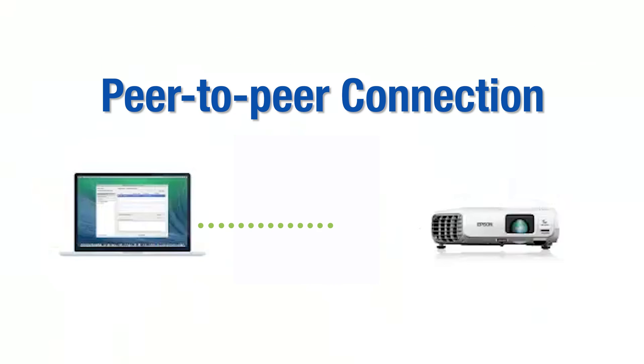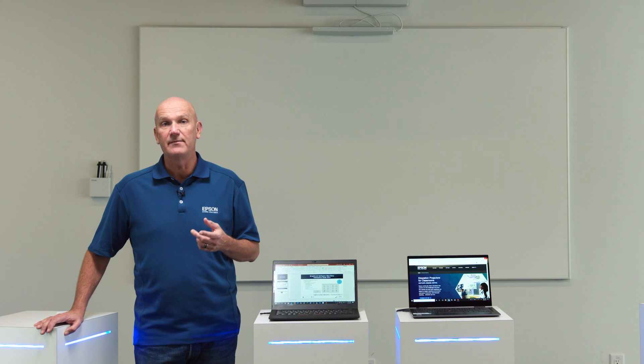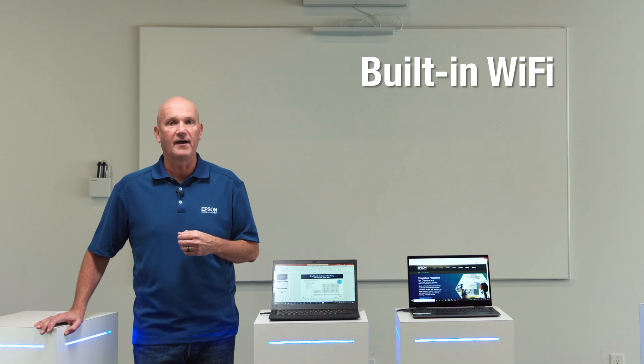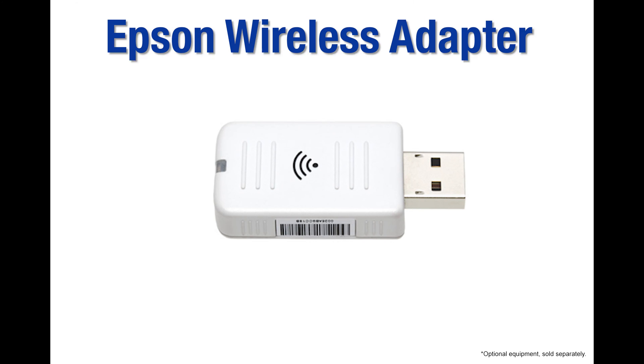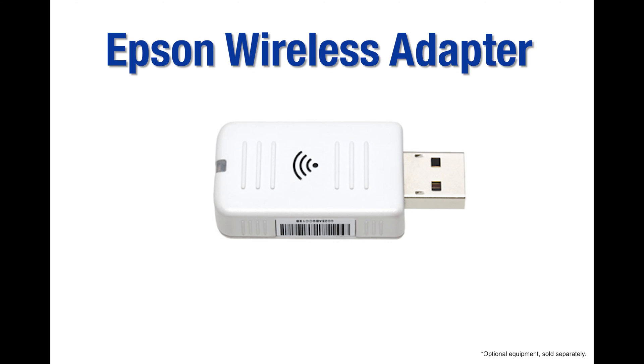If your projector is not networked, you can still wirelessly display local content from your device by creating a peer-to-peer connection between your device and the projector. In order to do so, you'll need a projector that supports a wireless connection. Many Epson models come equipped with built-in Wi-Fi. If your model does not include Wi-Fi, in most cases you can purchase an Epson wireless network adapter that plugs into the Wi-Fi port on the projector.